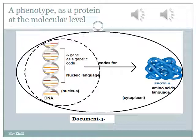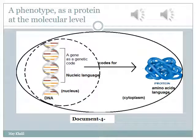The gene, which carries the genetic code to produce a certain protein, is found in the nucleus, and its language is nucleic acid language — because it is made up of nucleotides. The protein, on the other hand, is made up of amino acids, so its language is amino acid language or proteic language. How does a gene of nucleic language give rise to a protein of amino acid language, given that the gene cannot leave the nucleus and the protein is synthesized in the cytoplasm? We need to find a mediator between the gene in the nucleus and the protein in the cytoplasm.